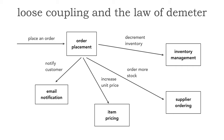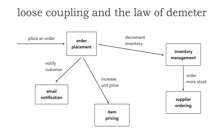Notice the order placement isn't doing that item pricing increase or ordering more stock. However, look at how coupled order placement is to the rest of the system. We apply the roles and responsibilities technique to say it's not my responsibility, it's somebody else's — but do you notice a problem? The order placement knows too much about the processing. So to apply the Law of Demeter — don't talk to strangers — the communication to supplier ordering should actually come from inventory management. By decoupling order placement from supplier ordering, there is less knowledge about the system, hence less coupling.